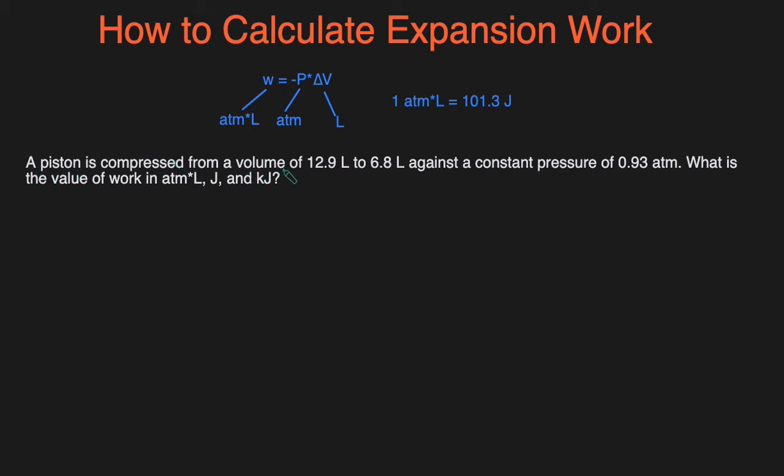A piston is compressed from a volume of 12.9 L to 6.8 L against a constant pressure of 0.93 atm. What is the value of work in atm·L, joules, and kilojoules? We know this is expansion work because the volume is being changed against a constant external pressure.